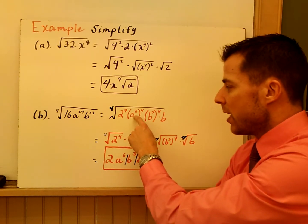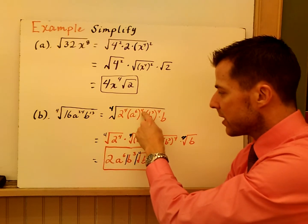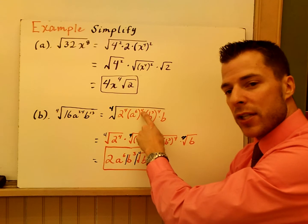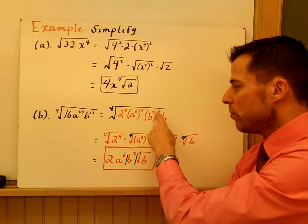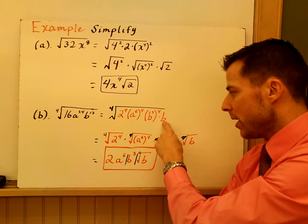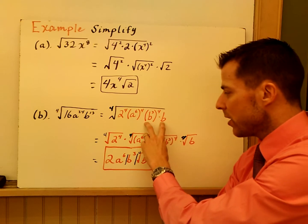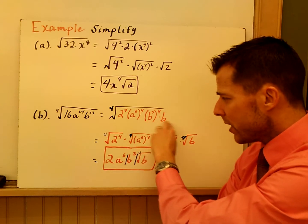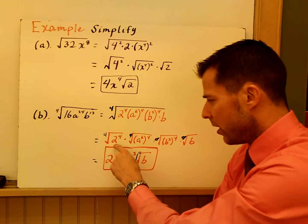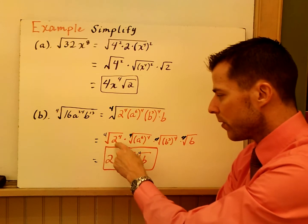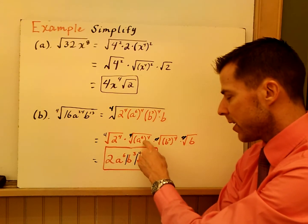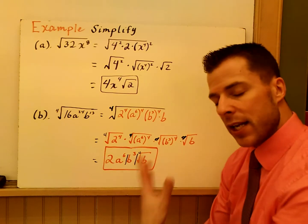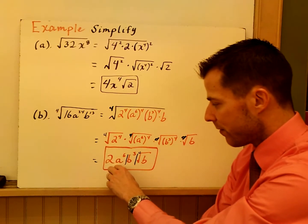The fourth root of 2 to the fourth. 24 is 6 times 4, so a to the 24th is a to the 6th to the 4th power. b to the 13th — 13 is prime, but b cubed to the fourth is 12, times b gives me b to the 13th, so that's a unique way to write it. I can break these apart since this is multiplication: the fourth root of 2 to the fourth, the fourth root of a to the 6th to the fourth, the fourth root of b cubed to the fourth. Any power that matches the index is going to come out front.